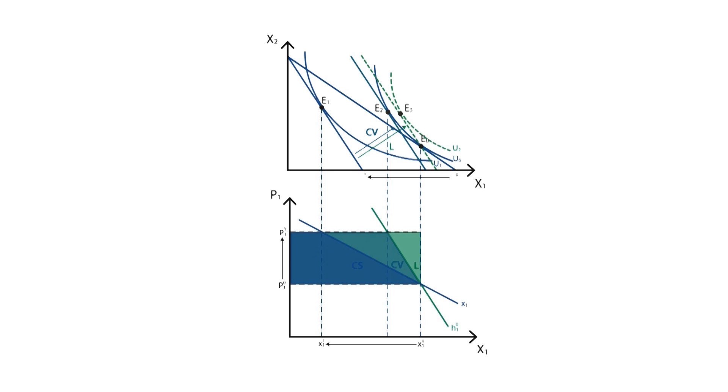The consumer's surplus effect, represented by the dark blue trapezoid, shows the loss of consumer surplus associated with the price variation.